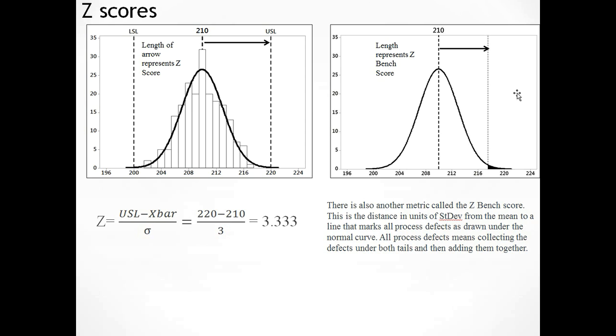Then we also have the Z bench which you'll see as well. And if we take all of our defects and put them under one side of the curve, the Z bench score is the distance expressed in terms of standard deviations from the mean to that line which intersects with the number of defects that we've made.